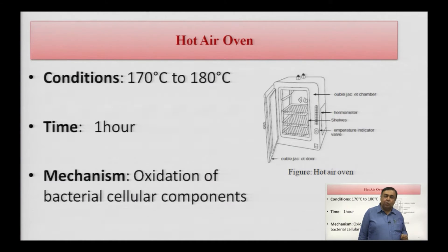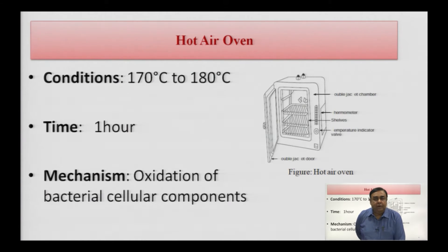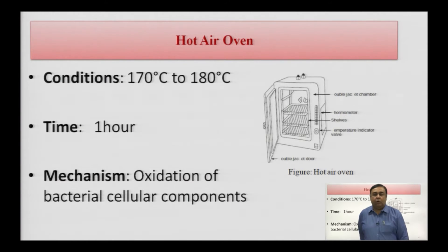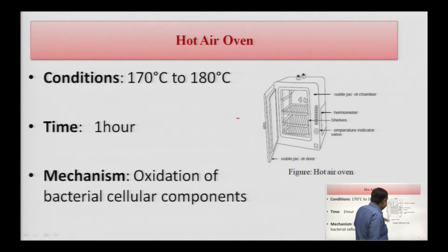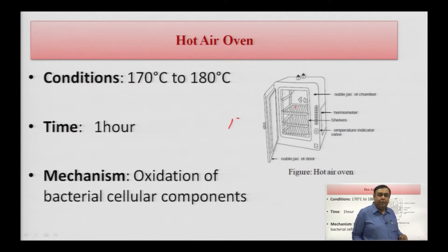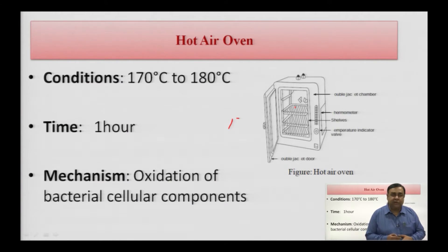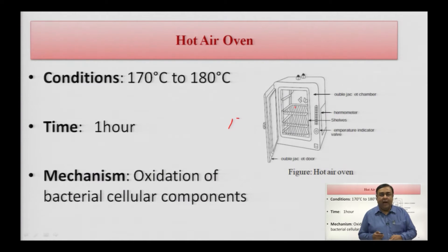The instrument commonly used in industries for dry heat sterilization is the hot air oven. The hot air oven is basically a double-jacketed machine with a large number of trays. You place the material on the tray, close the outer door, and a thermometer inside records the temperature. The temperature is maintained at 170 to 180 degrees Celsius for a minimum of one hour.